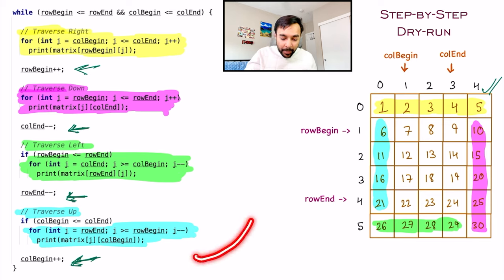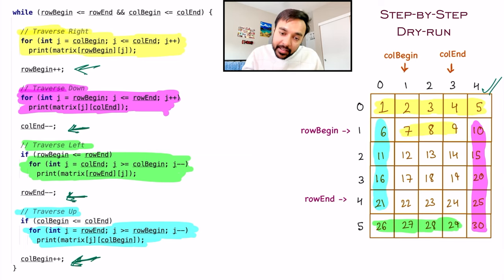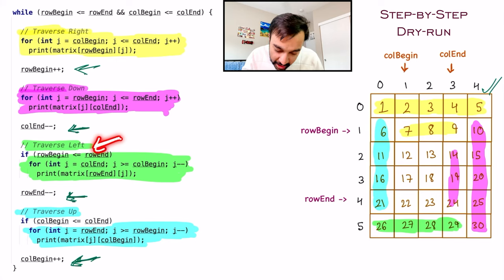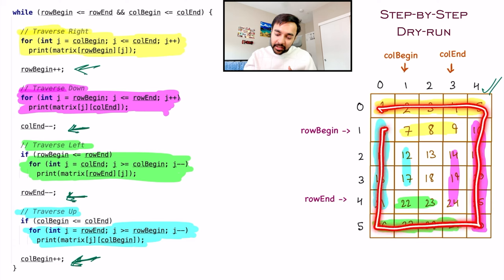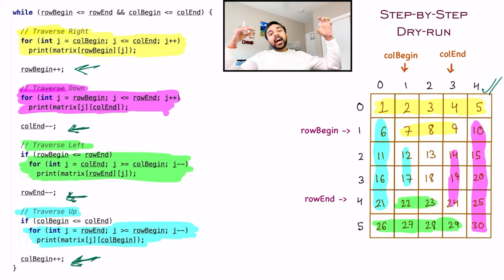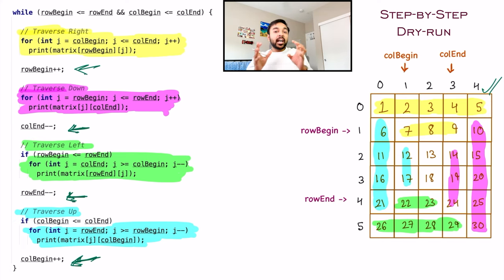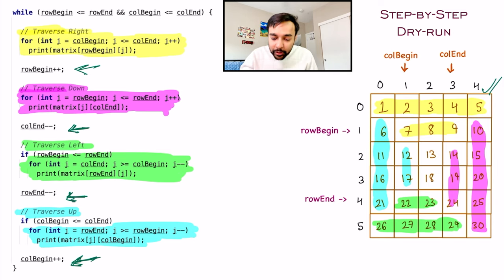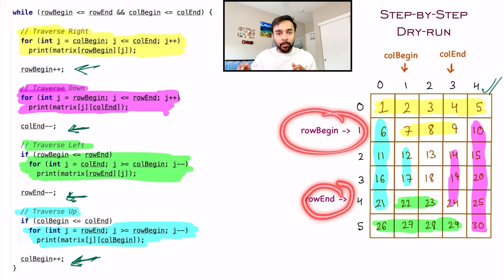When the loop runs again, you traverse right and cover 7, 8, and 9. Then traverse down: 14, 19, and 24. Then traverse left: 23 and 22. Then traverse up: 17 and 12. We are doing all of this in a spiral fashion, and the loop will continue until you stop at 18. The two additional conditions inside the loops are sanity checks to avoid array index out-of-bounds exceptions — the value of column_begin cannot exceed column_end, and the value of row_end cannot go below row_begin.